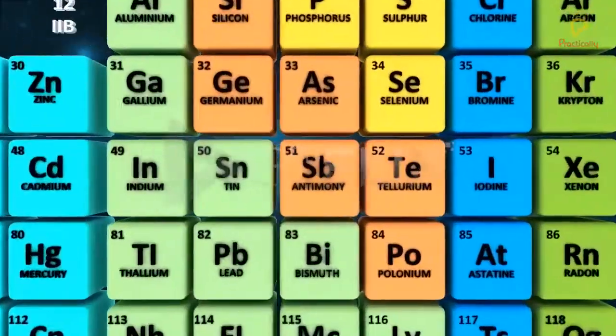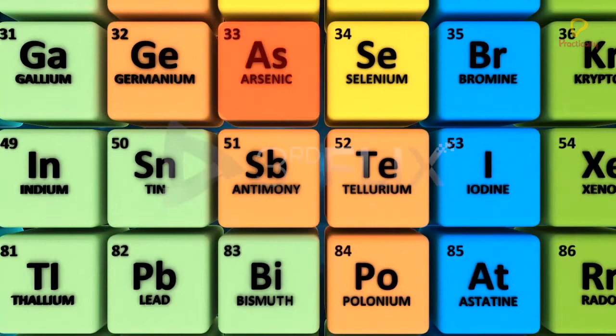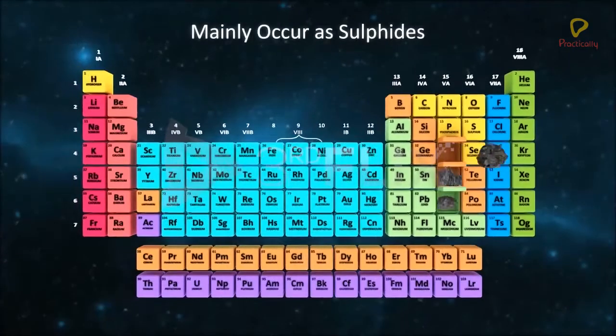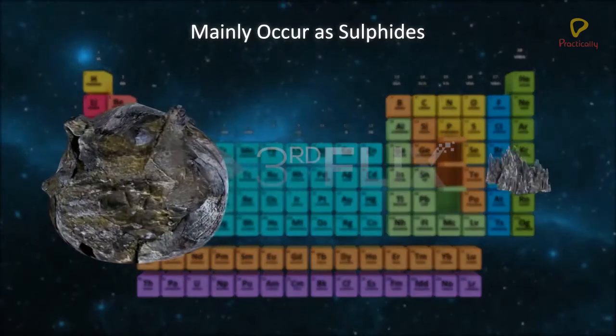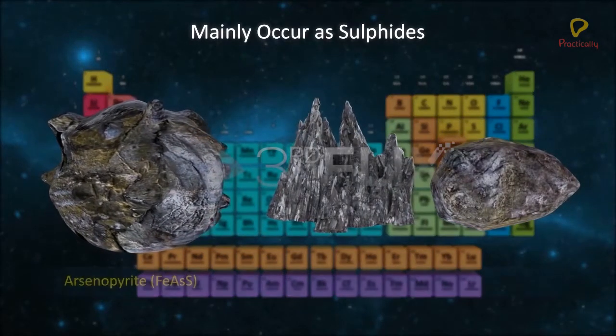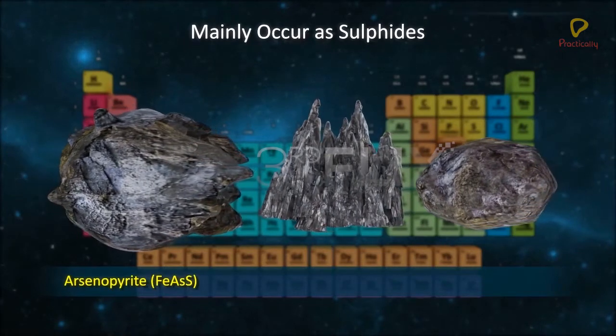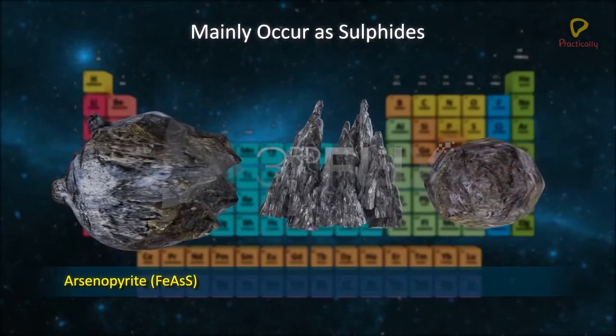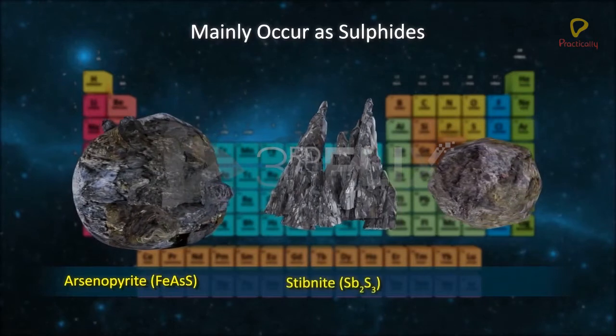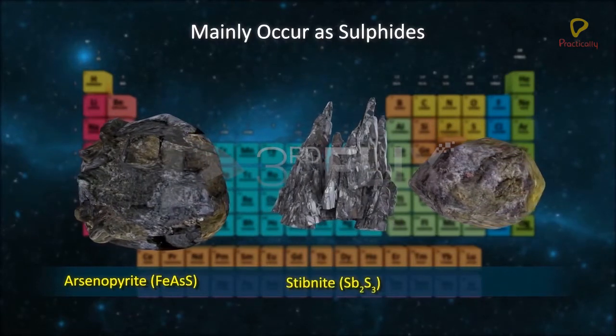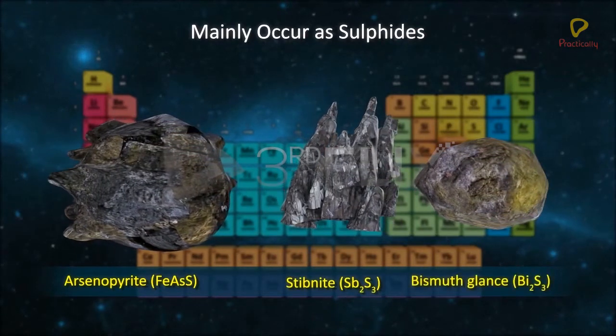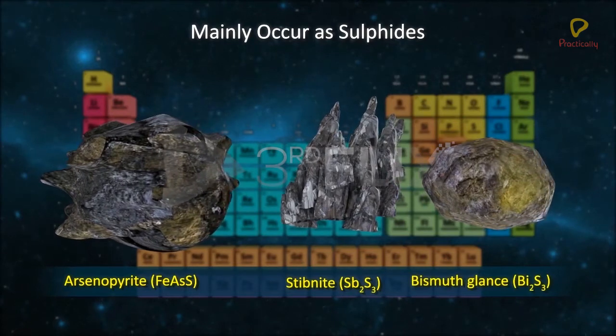The remaining elements of the group, that is arsenic, antimony and bismuth, mainly occur as sulfides. For example, arsenopyrite FeAsS, stibnite Sb2S3, and bismuth glance Bi2S3.